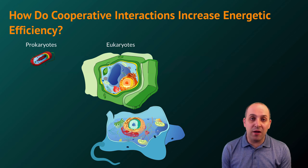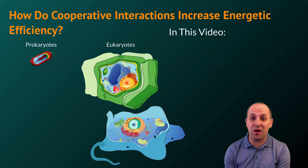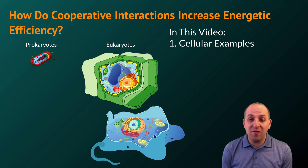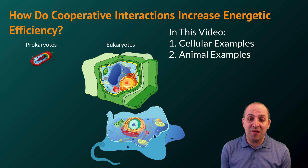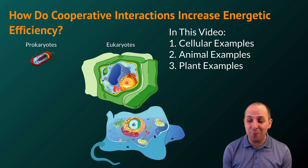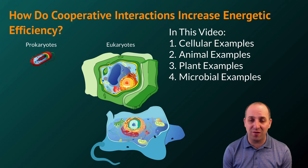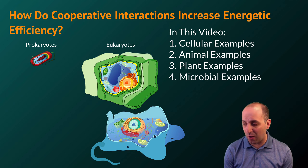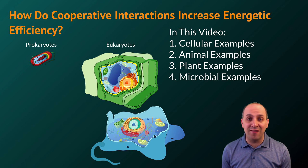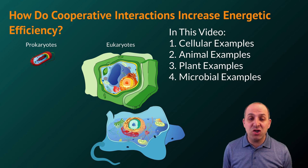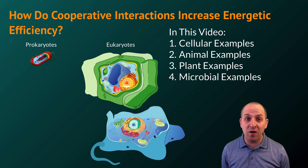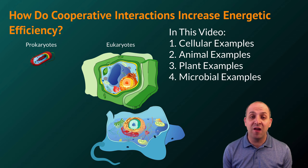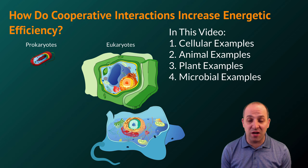The question that we're going to be looking at in this video is: how do cooperative interactions increase energetic efficiency? We're going to look at a couple of different examples — some cellular examples, some animal examples, some plant examples, and some microbial examples as well. It's important to understand that these are just examples meant to illustrate a larger notion, which is that cooperation between different parts of an organism and between different organisms leads to an increase in energetic efficiency.